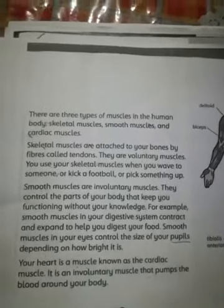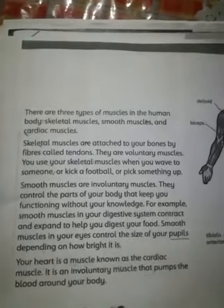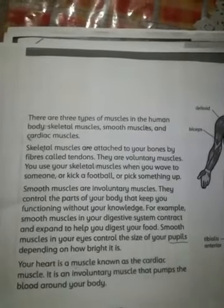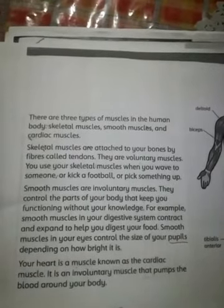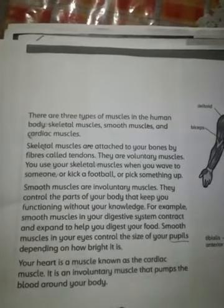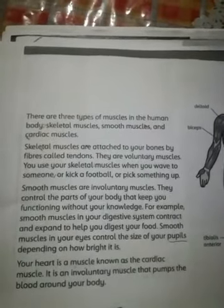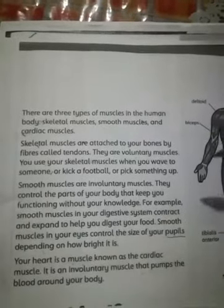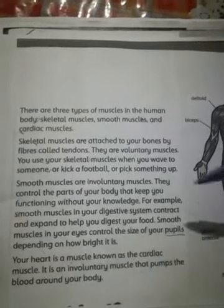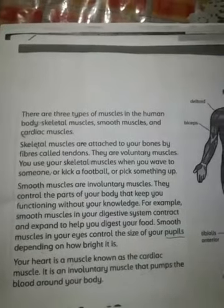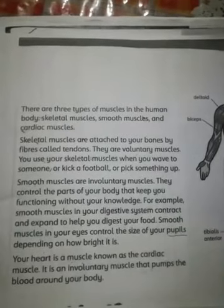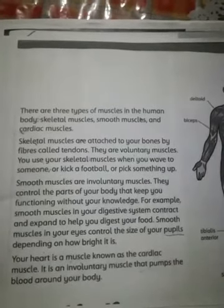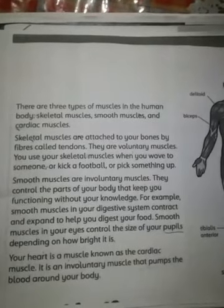For example جو ہمارا stomach ہے — stomach جو ہے وہ ایک muscle ہے — جب وہ food کو digest کر رہا ہوتا ہے تو وہ اس میں help کرتا ہے، اس کی movement ہو رہی ہوتی ہے۔ یہ digestion کا process ہمیں پتہ نہیں ہوتا، وہ اپنی مرضی سے ہوتی چلی جاتی ہے — تو وہ smooth muscles ہوتے ہیں۔ اس کے علاوہ pupil جو ہوتا ہے — ہماری آنکھ کے اندر جو black color کا حصہ ہوتا ہے — اس پر depend کرتا ہے کہ کتنی bright روشنی آتی ہے — یہ بھی smooth muscles اور involuntary ہوتا ہے۔